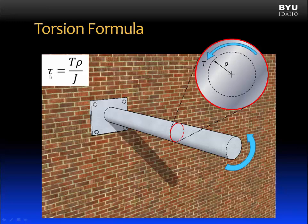We can also see that when rho goes to zero, when it gets smaller, tau also goes to zero. When rho gets bigger, tau will also get bigger. Now let's talk about J.